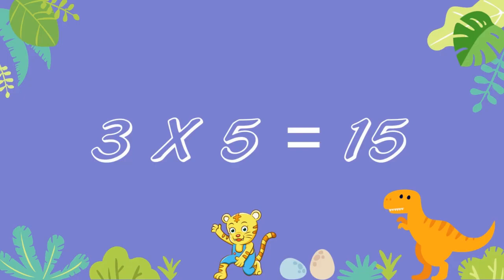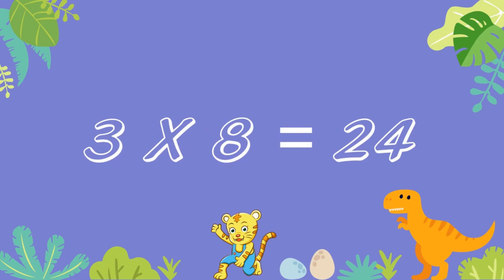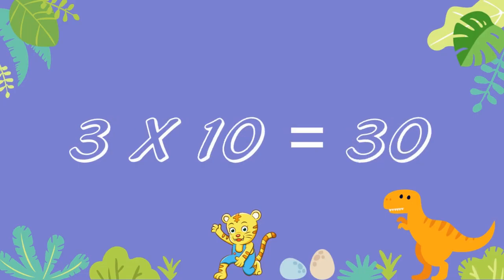3 fives are 15. 3 sixes are 18. 3 sevens are twenty-one. 3 eights are twenty-four. 3 nines are twenty-seven. 3 tens are thirty.